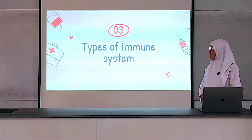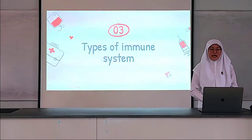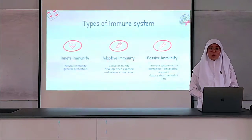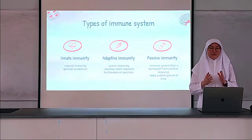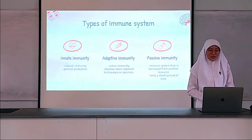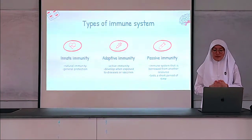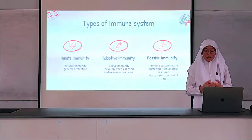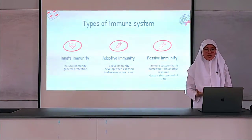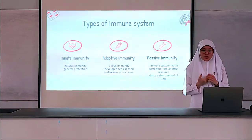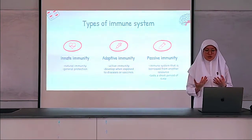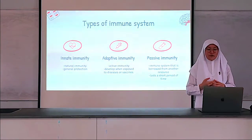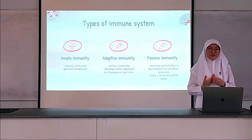Next, I will briefly explain the three types of immune system. First, innate immunity. Innate by itself means natural, and everyone is born with this immunity — it is a general type of protection. For instance, the skin acts as a barrier to block germs from entering the body, and the immune system recognizes when certain foreign substances could be dangerous to us.